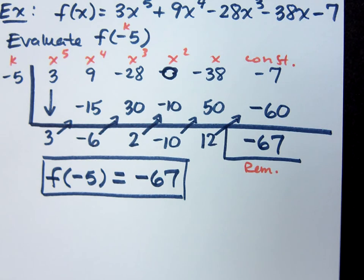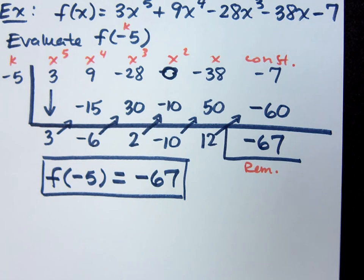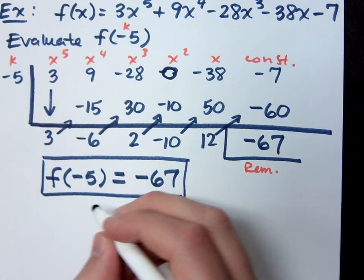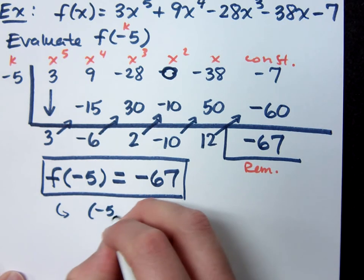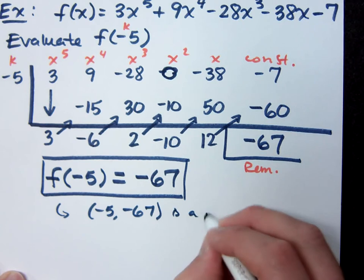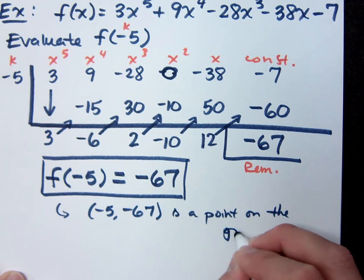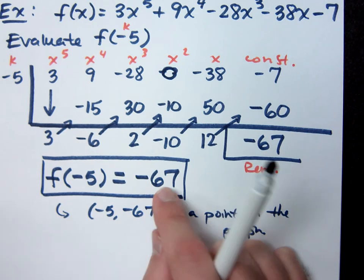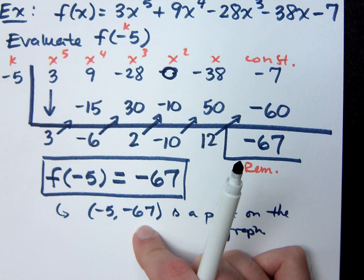Let me give you an example where we can show that. Negative 5, negative 67 would be a point on the graph, right? If this is your function notation, that means the ordered pair negative 5, negative 67 is a point on the graph. Which means that if you can equal zero — if you have a number comma zero — that corresponds to an x-intercept.